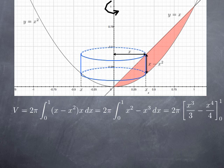At 0 we get 0. At 1 we get 1 third minus 1 fourth. One third is 4 twelfths, and 1 fourth is 3 twelfths, so we get 1 twelfth for the value of the antiderivative. We multiply that by 2π and get π over 6.